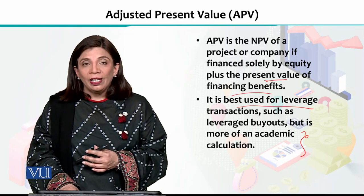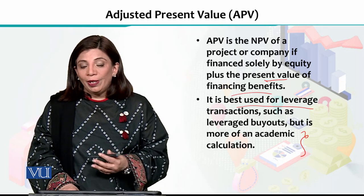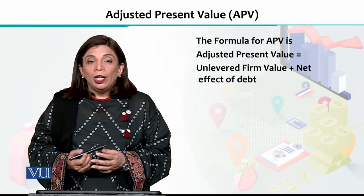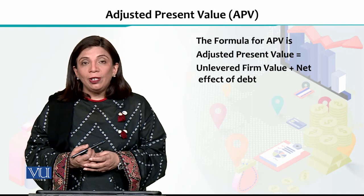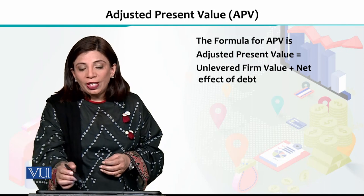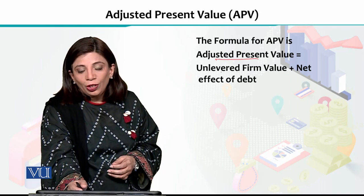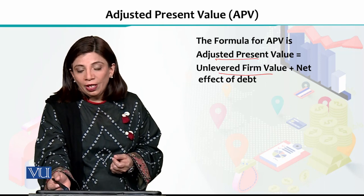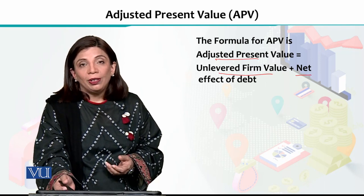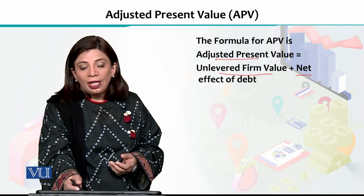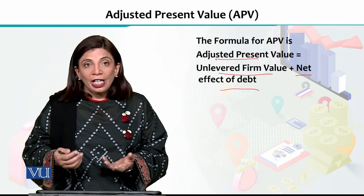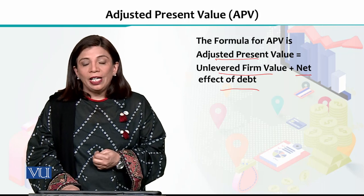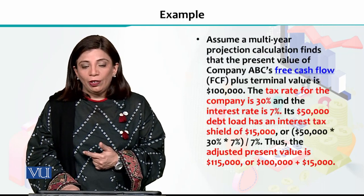So what is the value of the firm, and how much does your equity have? You will find the net effect of debt, and also what overall benefits you get. When you add up these two components, you will get the adjusted present value.